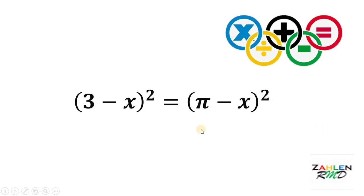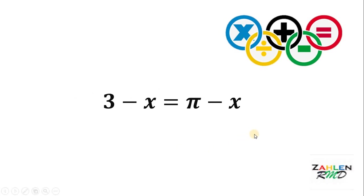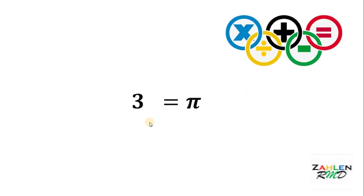The next step is we take the square root on both sides. If we take the square root on both sides, the two squares cancel out. So we have 3 minus x equals pi minus x. If we add x to both sides, we cancel out negative x on both sides. Therefore, we have 3 equals pi.